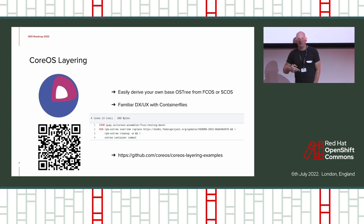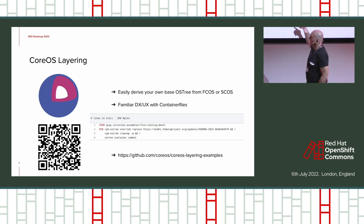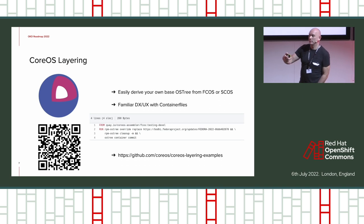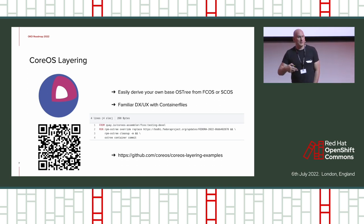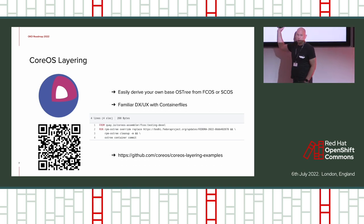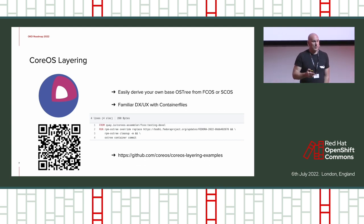Today, if you want to customize that image, you typically have to use a machine config custom resource, and that patch is overlaid after your OKD system is running. This layering will give you the ability to customize the base image — put any new packages, customization, or configs you want on it and create the image. It's available today within Fedora, and we're going to change the OKD build to use this technology.